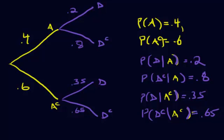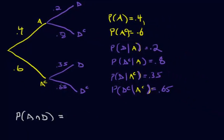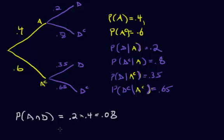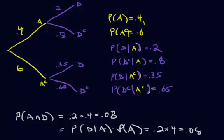Okay, so our first question — let's do some practice ones. The probability of A and D: using the conditional probability formula, the probability of A and D is found by just multiplying up the branches A and then D. So looking at the tree diagram, it's going to be 0.4 times 0.2, which gives 0.08. Using the conditional probability formula, it's the probability of D given A times the probability of A — 0.2 times 0.4 — which is still 0.08.